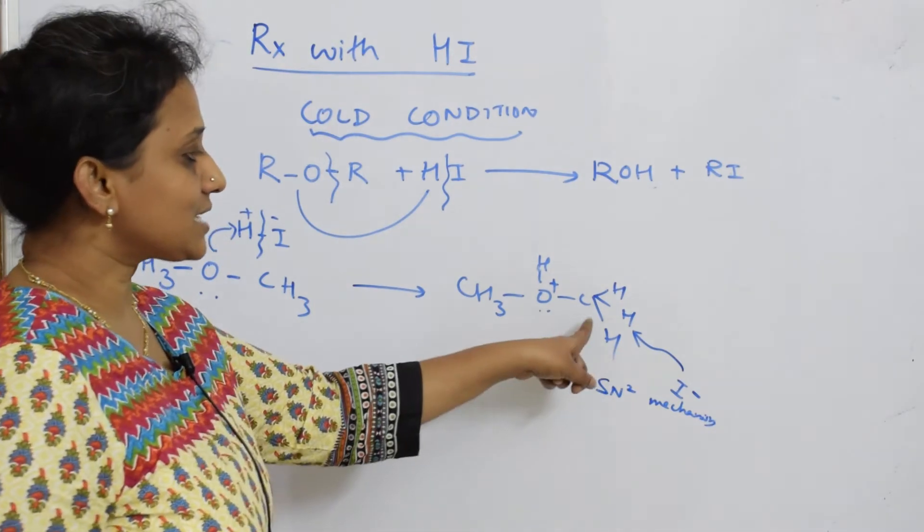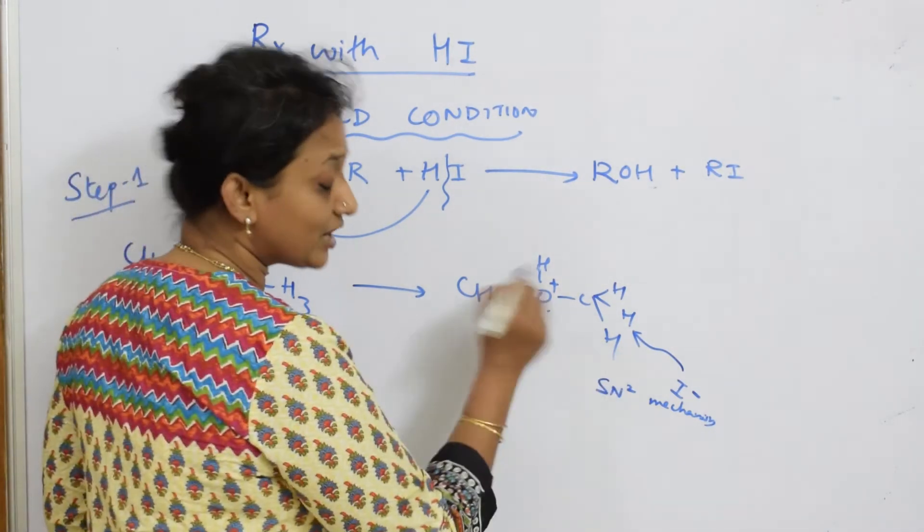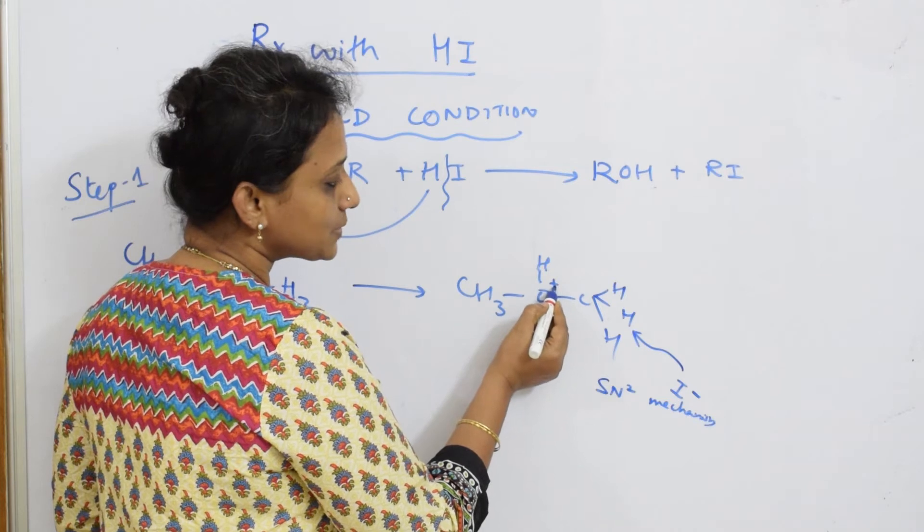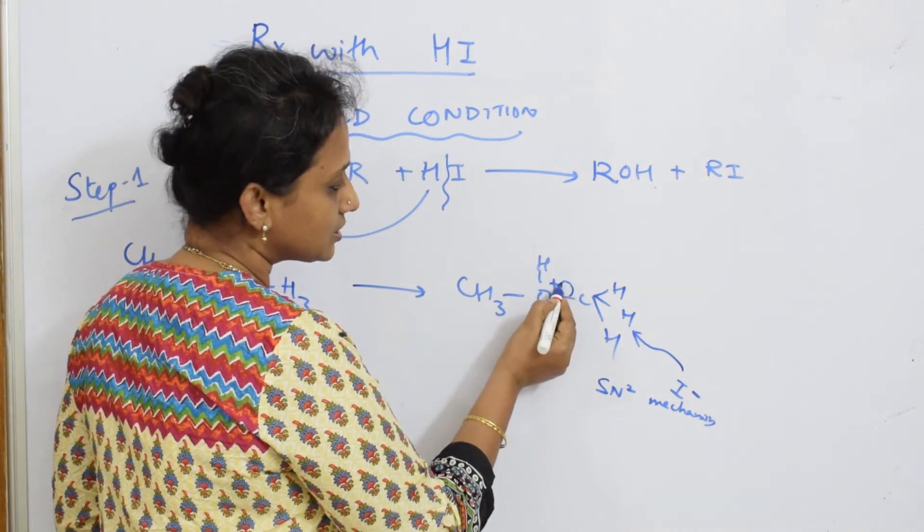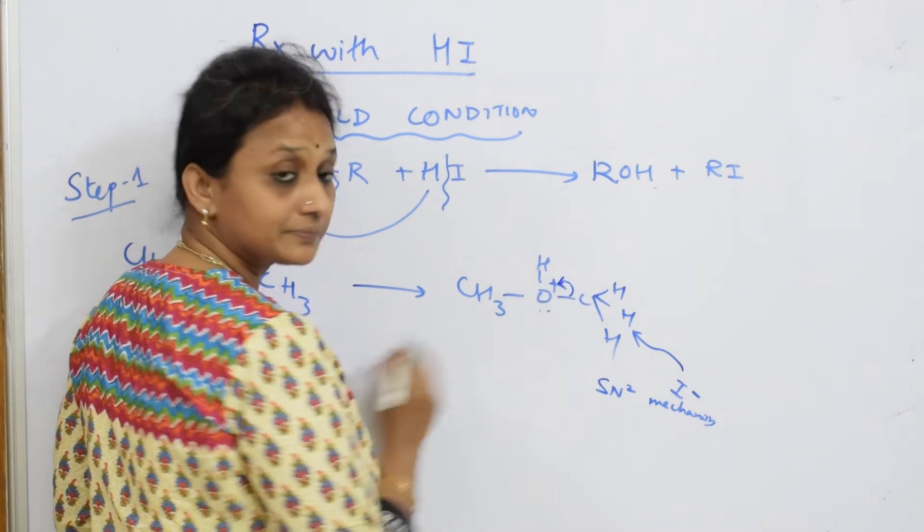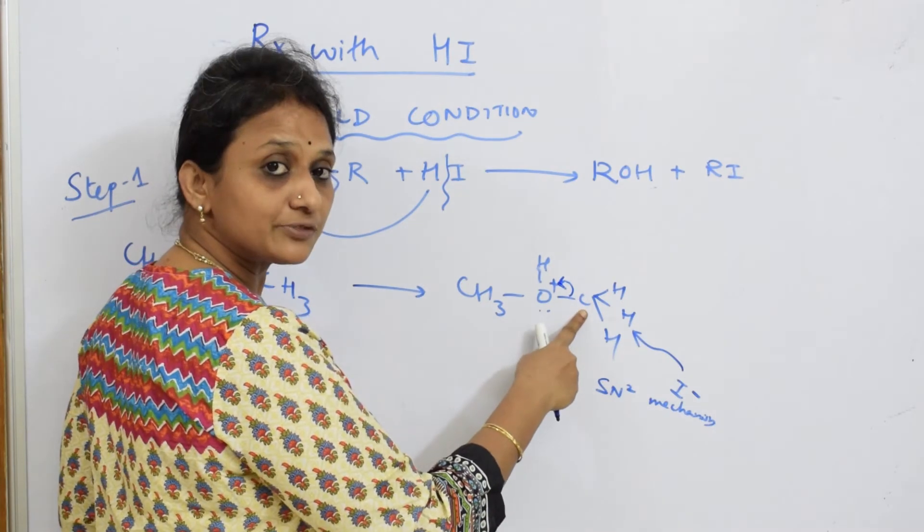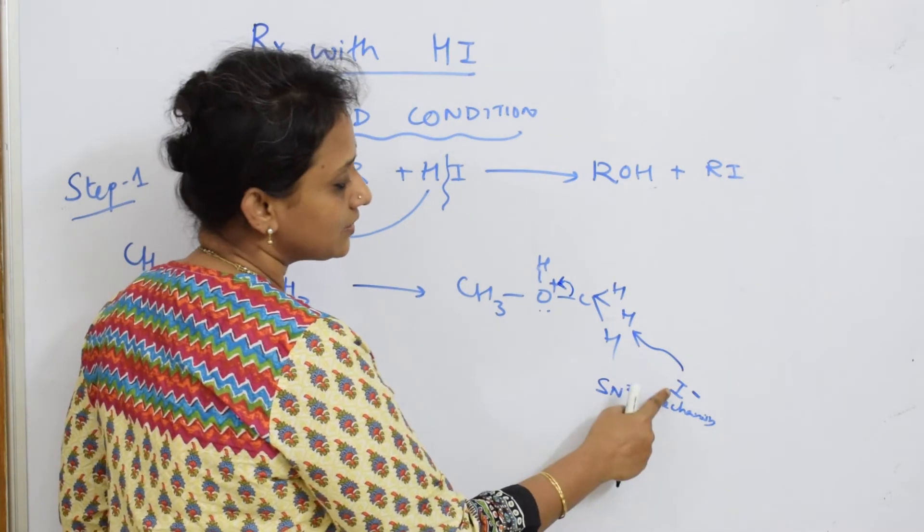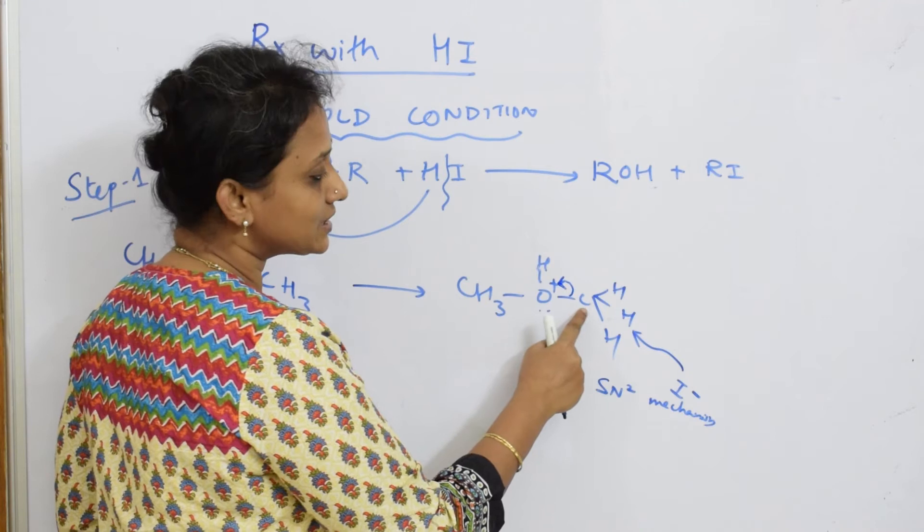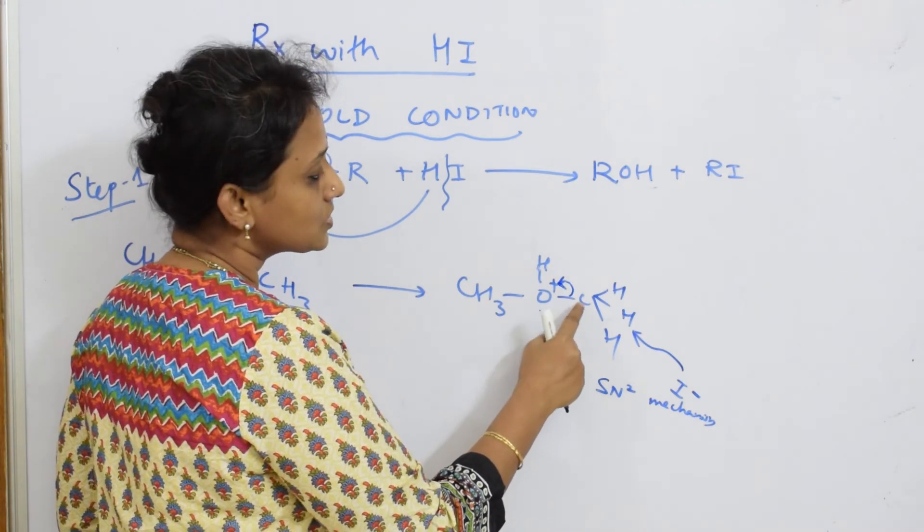When this is attacking this cation, why is this attacking? Basically, this has become positive when this bond shifts here. This attains positive charge. Then this iodine nucleophile comes and attacks this carbocation.